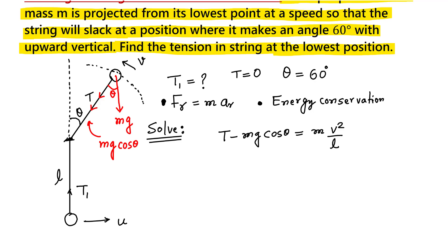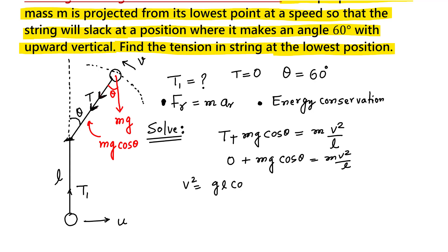The problem states that when theta equals 60 degrees, tension is zero. At that position, T and Mg cosθ actually act in the same direction, so the equation becomes: T + Mg cosθ = Mv²/L. Plugging T = 0 gives us V² = GL cosθ. Let us call this equation 1.